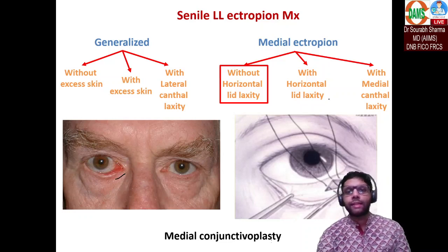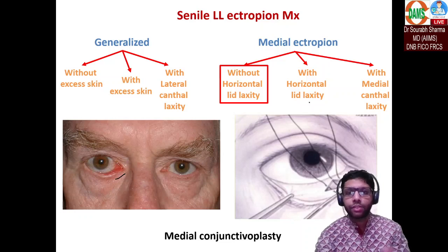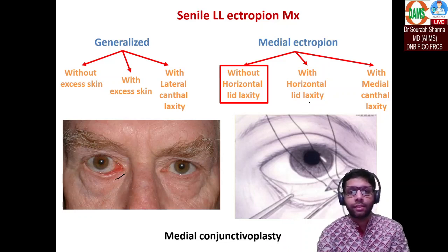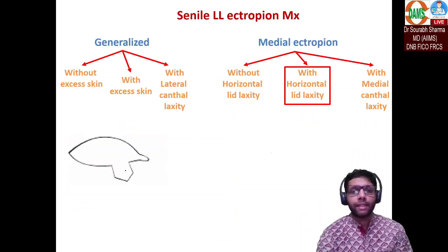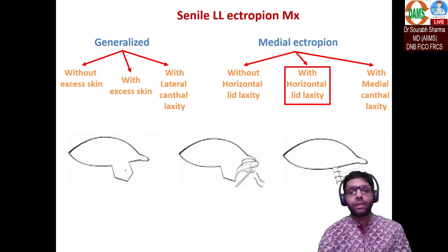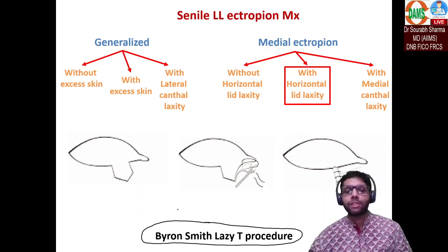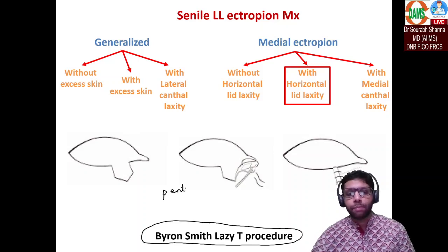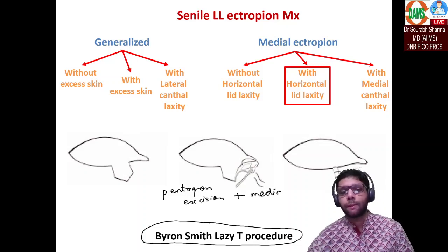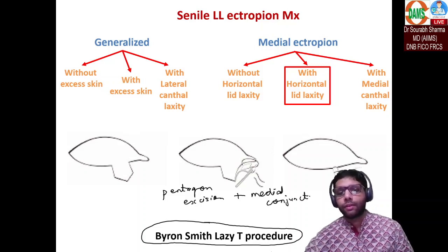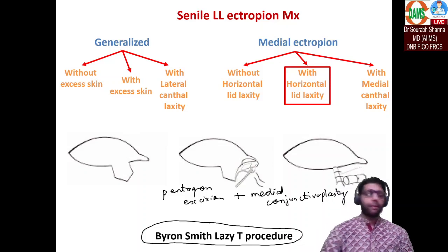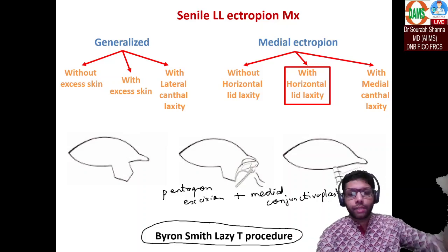If there is medial ectropion with horizontal laxity, you combine pentagon excision with medial conjunctivoplasty. Pentagon excision takes care of horizontal laxity; medial conjunctivoplasty takes care of medial ectropion. This combined procedure is called the lazy-T procedure.